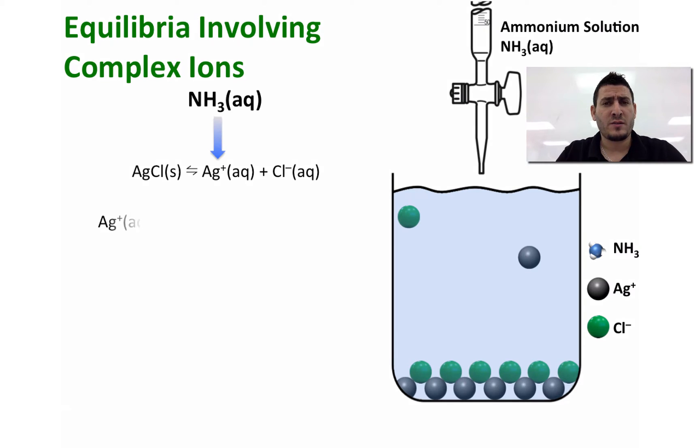What happens if I add ammonia solution to this solution? Now ammonia, which is considered as a ligand, will react with the silver ion to form the complex ion Ag(NH3)2+.